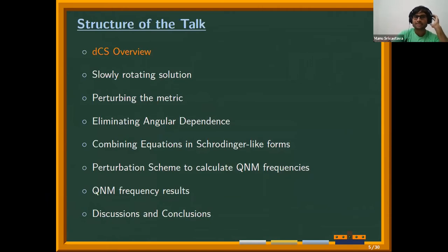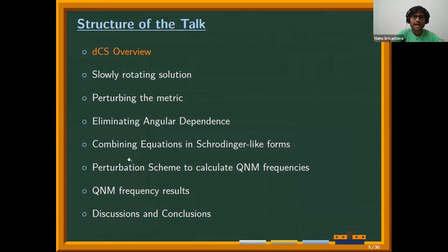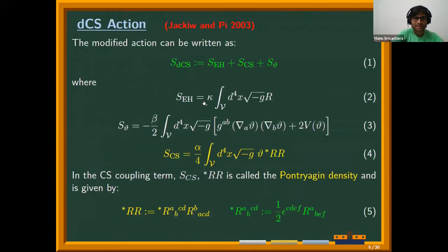I'll structure the talk as follows: a quick overview of DCS theory, then a description of the slowly rotating solution we are studying, the steps of calculating the quasi-normal mode frequencies, and towards the end, results with observational implications. Let's begin with the DCS overview.